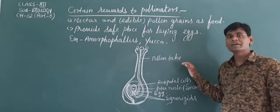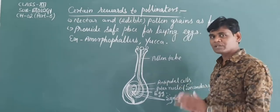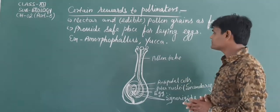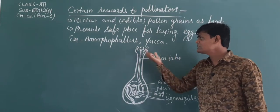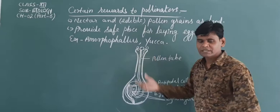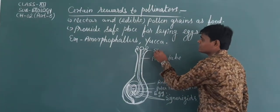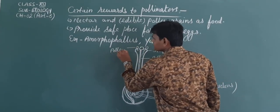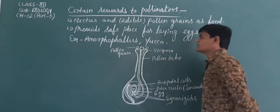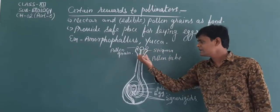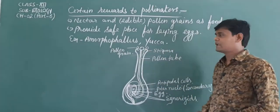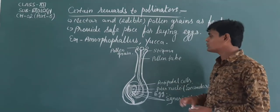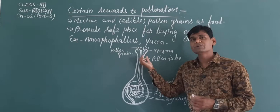Now let me see the structure of fertilization. During pollination, pollen grains are transferred onto the stigma. When compatible pollen grains land on the stigma, they germinate to generate a pollen tube. The pollen tube begins to form and grow.